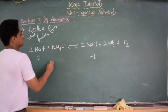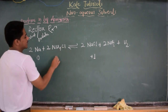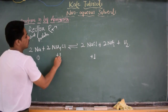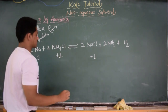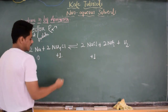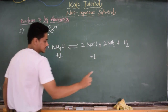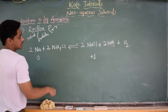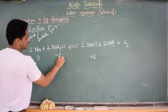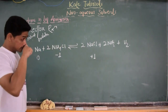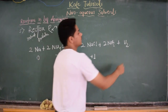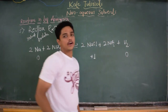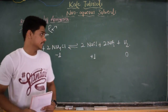Here, NH4+Cl− has a +1 oxidation state for H. If we consider only 1 hydrogen, it will be −1 oxidation state for hydrogen. Whereas in H2, the oxidation state of hydrogen is 0.